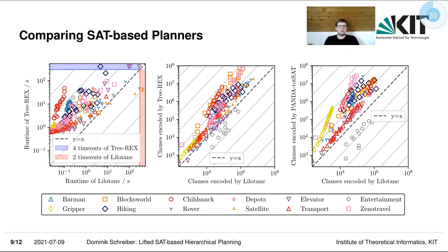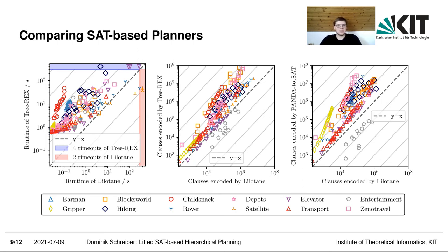Now let's look at some evaluations comparing SAT-based TO-HTN planners. On the left-hand side, we have the runtime of Lilutane versus the runtime of TreeRex. This is a log-log plot: points along the diagonal mean an instance was solved equally fast by both approaches, and points in the upper triangle denote that Lilutane was faster. Each gray diagonal denotes one order of magnitude. We can see that especially for low runtimes, Lilutane has less overhead, and also for higher runtimes, Lilutane is almost consistently better than TreeRex.